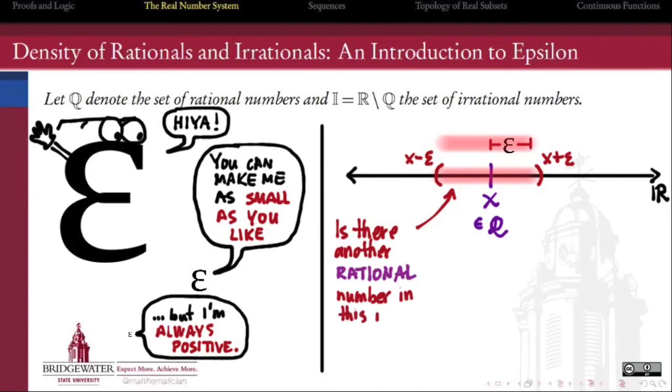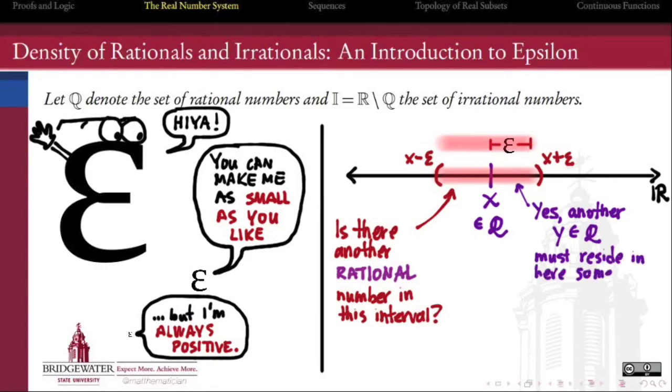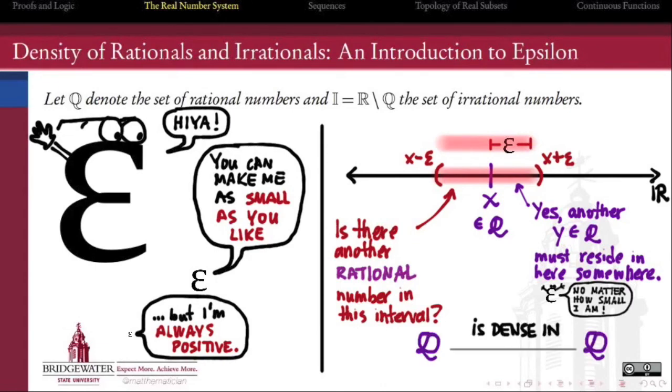We'll find out that the answer to this question is yes. No matter how small we make epsilon, there is another rational number within an epsilon's reach of x. And we say that Q is dense in Q.